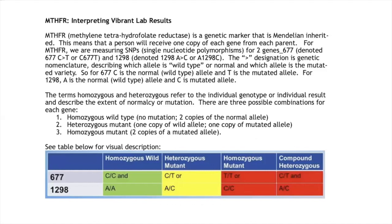MTHFR, or methylene tetrahydrofolate reductase, is a genetic marker that is Mendelian inherited. This means that a person will receive one copy of each gene from each parent. For MTHFR, we're measuring SNPs, or single nucleotide polymorphisms, for two genes: 677C>T and 1298A>C.